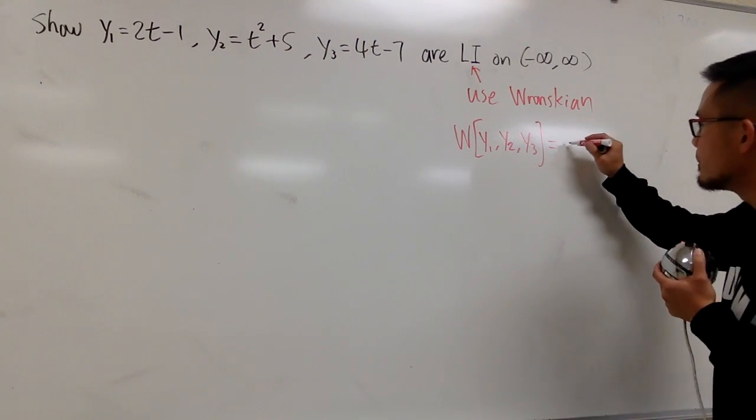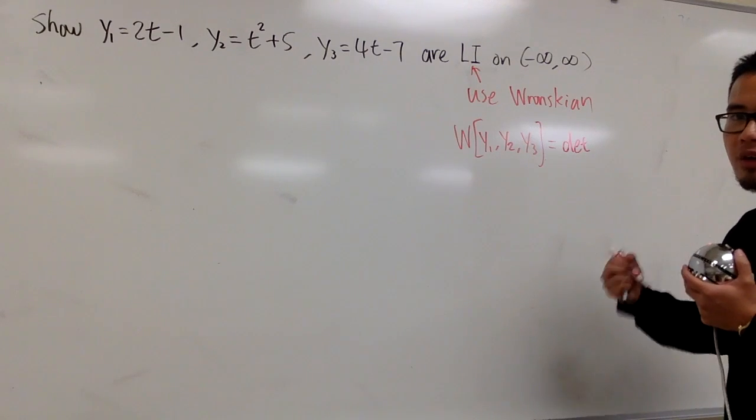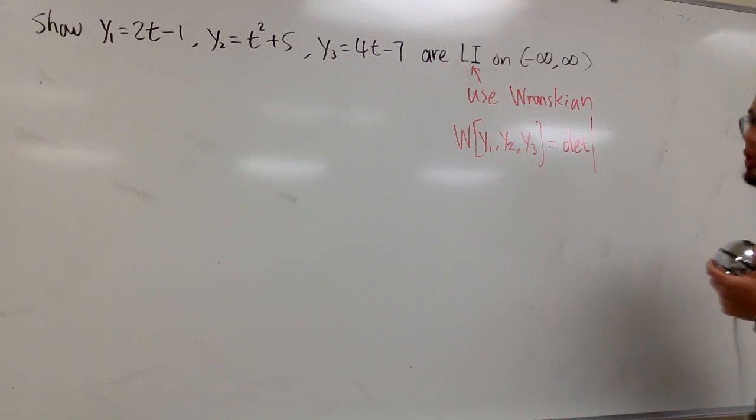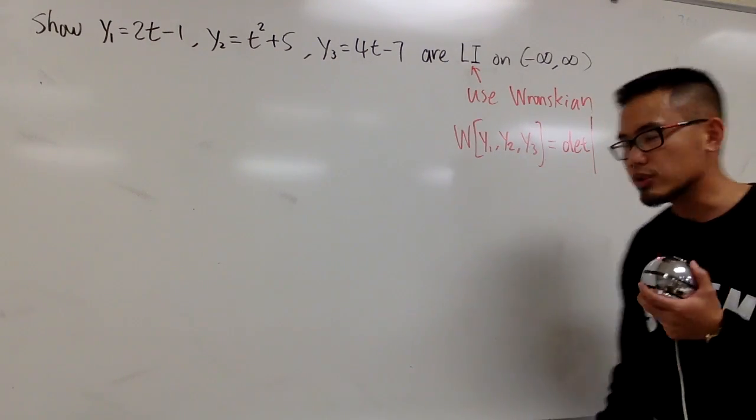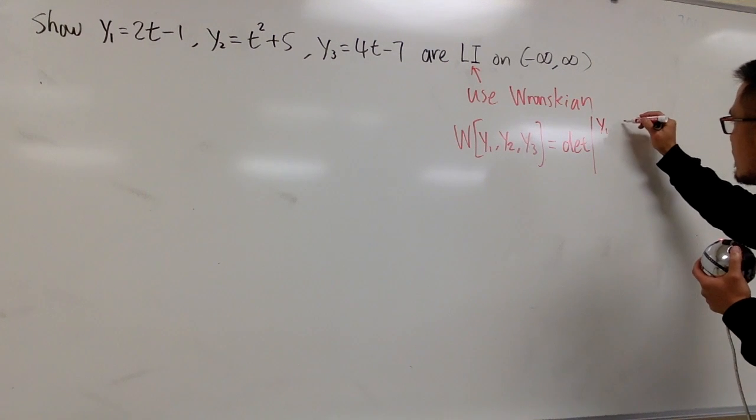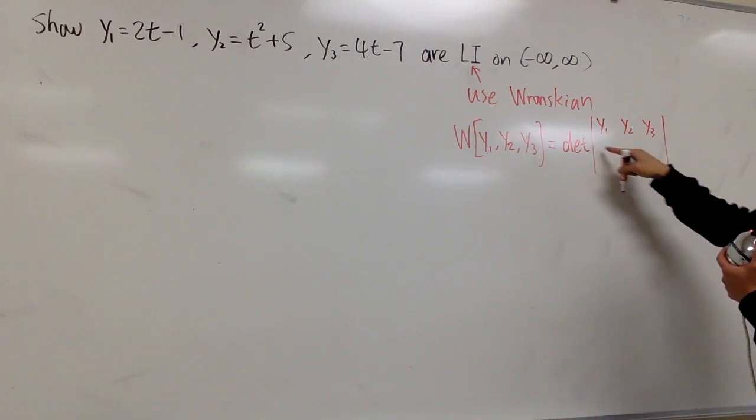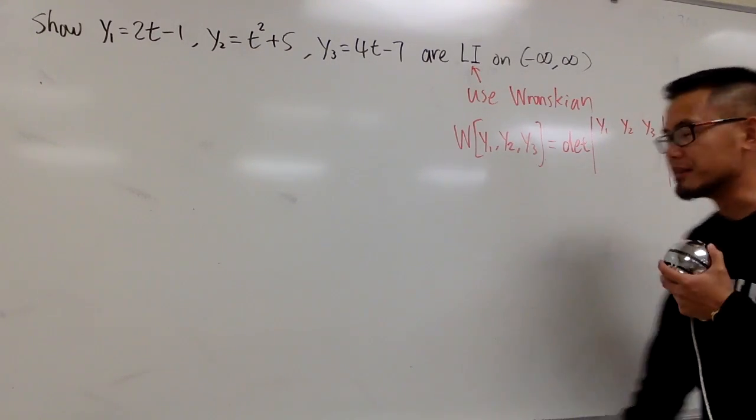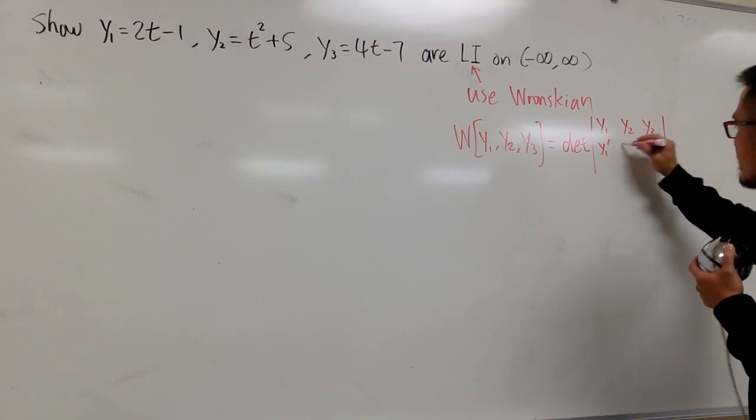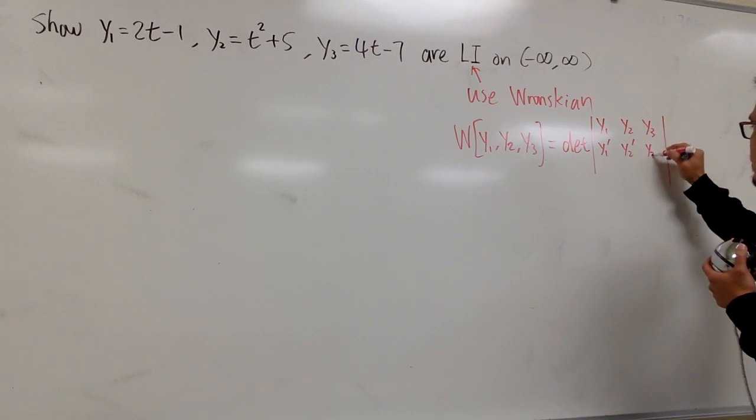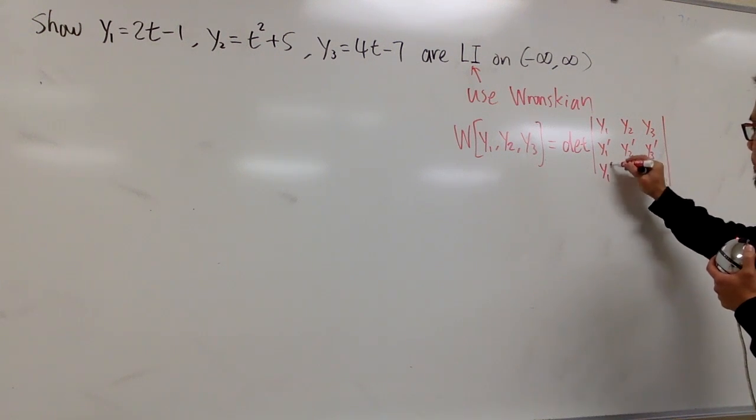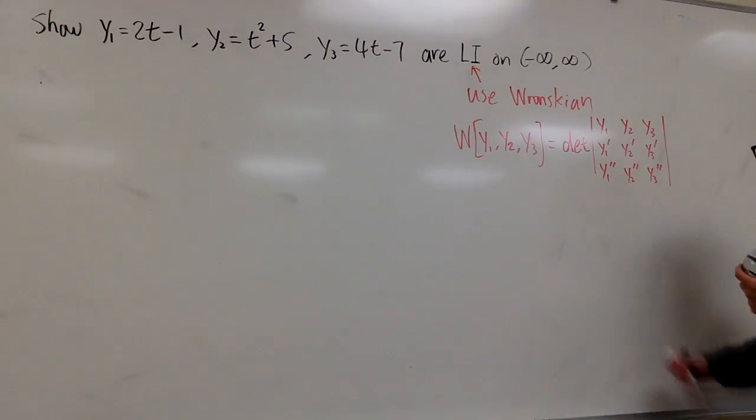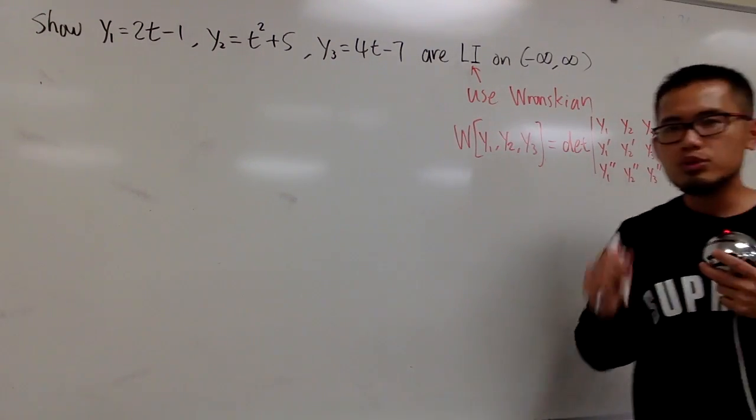on the right-hand side, it's actually a determinant of a three-by-three matrix. The matrix is going to be: the first row are just the original functions y1, y2, y3. The second row is going to be the first derivatives. The third row is going to be the second derivatives. So here, this is y1 prime, y2 prime, y3 prime, and then the last row is y1 double prime, y2 double prime, y3 double prime.